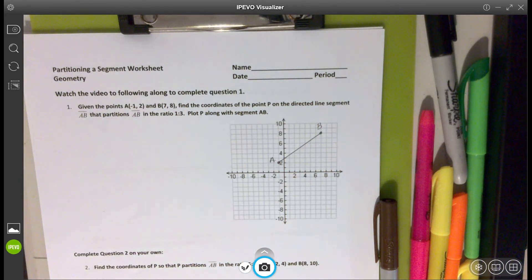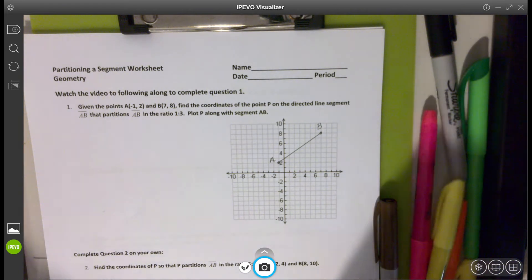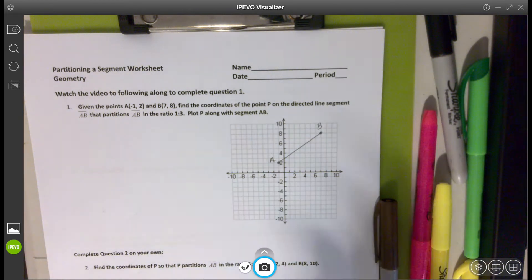All right, so I'm going to read the problem. It says, given the points A and B, find the coordinates of point P on the directed line segment so that AB is in the ratio of one to three. Plot the point P along the segment AB.